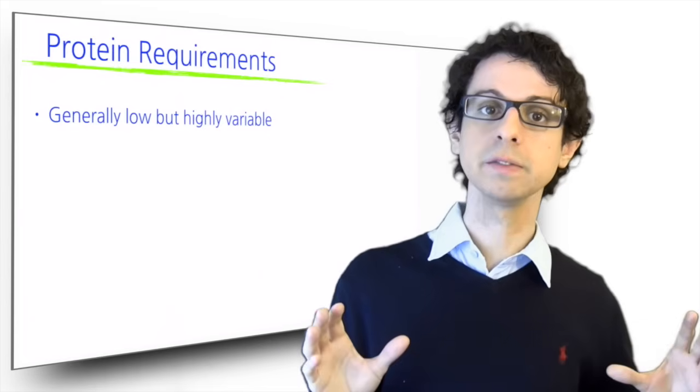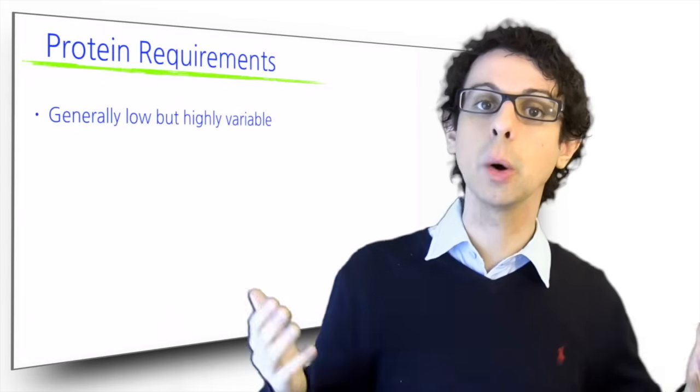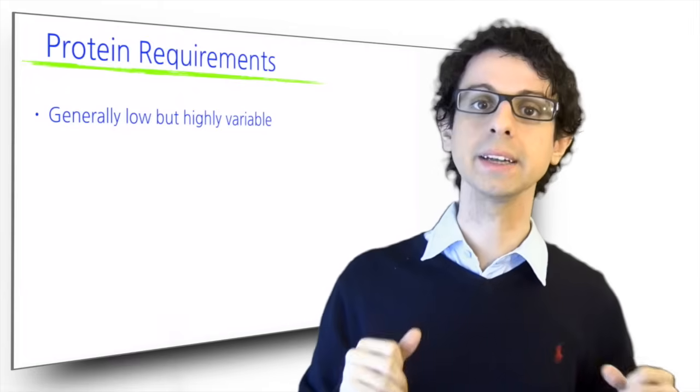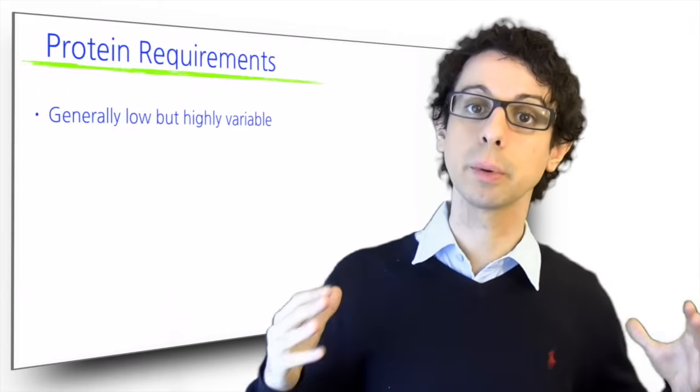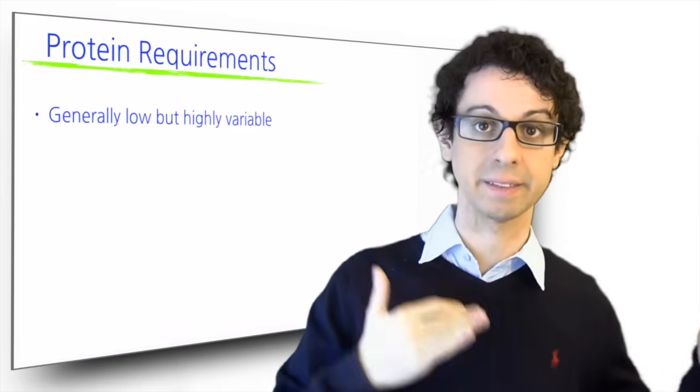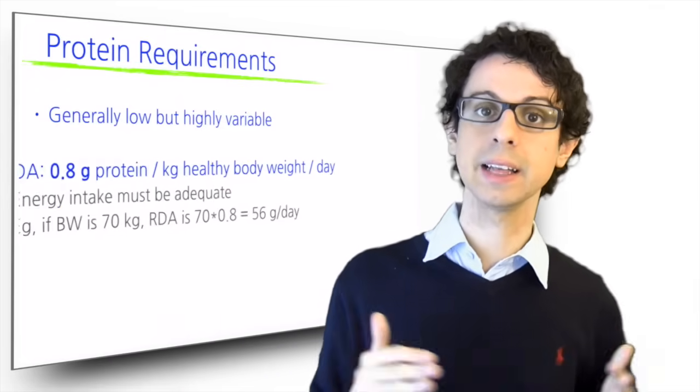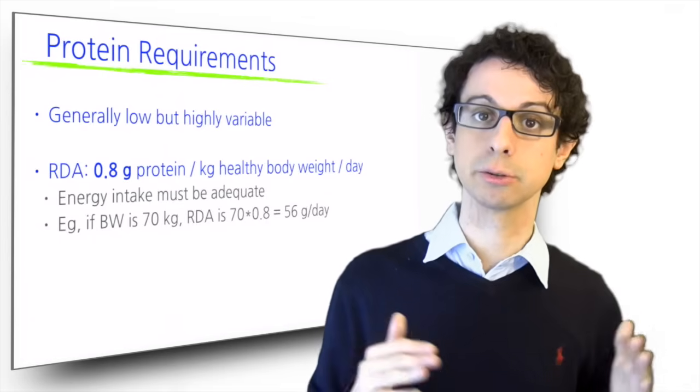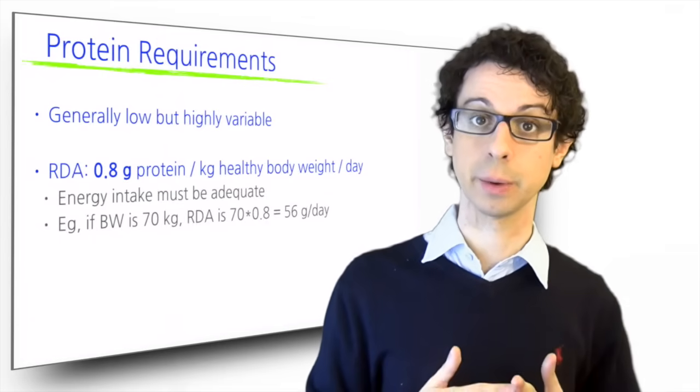But because the individual person normally doesn't know if he needs 0.2, 0.5 or 0.8, and because protein is so important, and considering that it's much better to have more than you need rather than having less, the recommended daily allowance for protein is 0.8 grams per kilo per body weight per day for everyone.